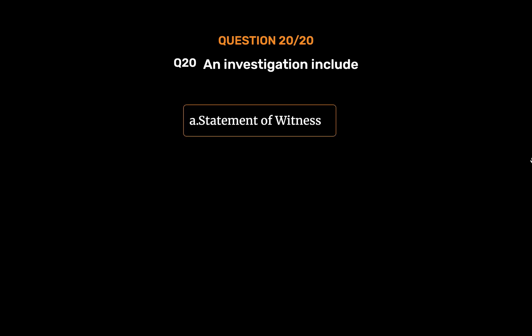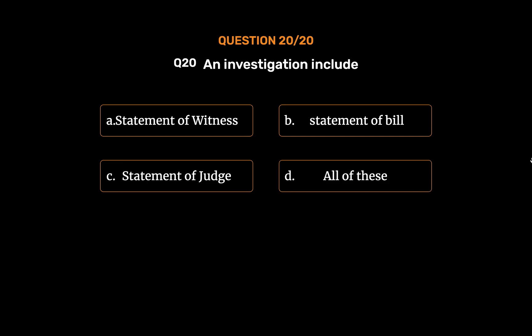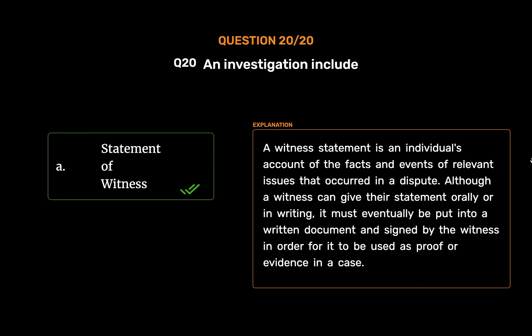Question No. 20. An investigation includes: Option A: Statement of witness. Option B: Statement of bill. Option C: Statement of judge. Option D: All of these. The correct answer is Option A: Statement of witness. A witness statement is an individual's account of the facts and events of relevant issues that occurred in a dispute. Although a witness can give their statement orally or in writing, it must eventually be put into a written document and signed by the witness in order for it to be used as proof for evidence in a case.